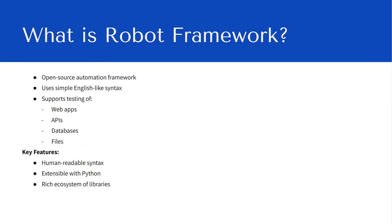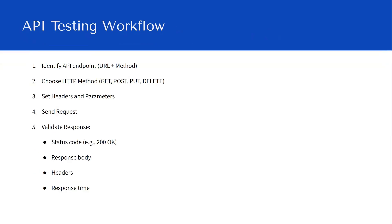Robot Framework is an open-source automation framework that uses simple English text to write test cases. It supports testing of web applications, APIs, databases, and files — four different areas. Key features include human-readable syntax, executability with Python, and a rich ecosystem of libraries. We don't write raw code in Robot Framework; when we need logic we write it in Python, but everything else is keyword-driven, meaning there are specific keywords you'll use to write your test cases.